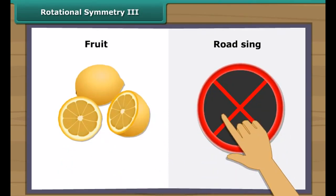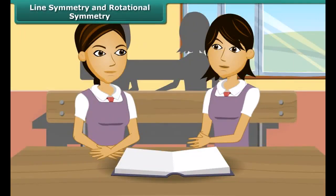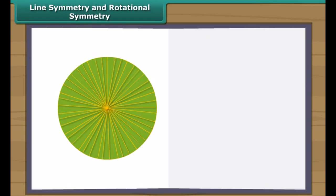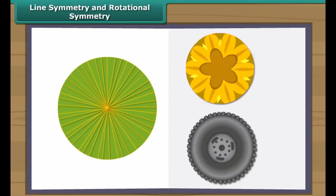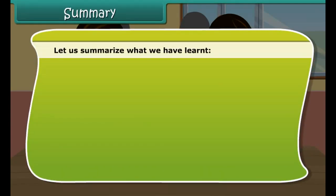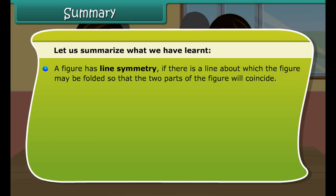Priya, can you tell the shapes around us which have rotational symmetry? Yes! When we slice certain fruits, the cross sections are shapes with rotational symmetry. There are many road signs that have rotational symmetry. Do you know which the most perfect symmetrical figure is? Is it a circle? Yes, the circle is the most perfect symmetrical figure. It can be rotated around its centre through any angle, and at the same time it has an unlimited number of lines of symmetry. Observe these circle patterns — every line through the centre forms a line of symmetry and has rotational symmetry around the centre for every angle.